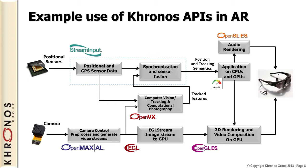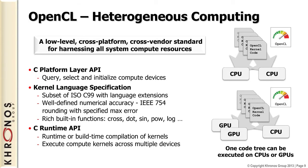OpenCL is a compute framework. The mobile SoCs — the processors inside mobile devices — have a whole bunch of processing power. There's typically a quad-core CPU complex and a multi-pipe GPU, as well as all the hardware for doing vision and video acceleration. OpenCL is a framework that lets you take your compute load and effectively use CPUs and GPUs all from one programming framework.